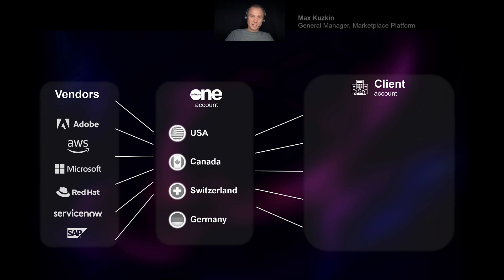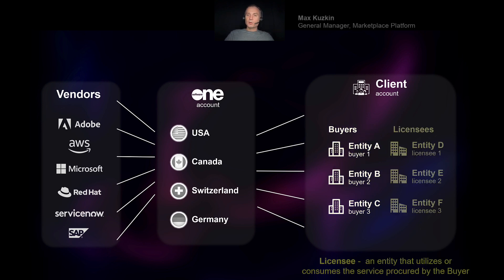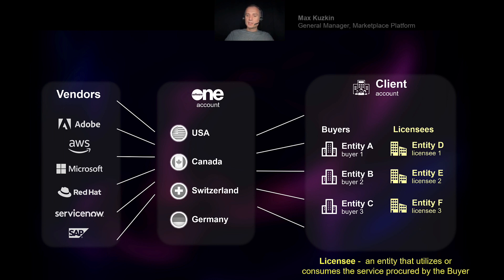Before clients can perform any action, they need to be onboarded — which means they need to define their entity structure. Buyers are the entities that engage in commercial activities with our sellers. On top of that, clients also define licensees — the entities that actually consume the services. In the simple case of an SMB, buyer and licensee are the same entity. But for large enterprises, we may have a buyer that procures software for dozens or even hundreds of other legal entities.